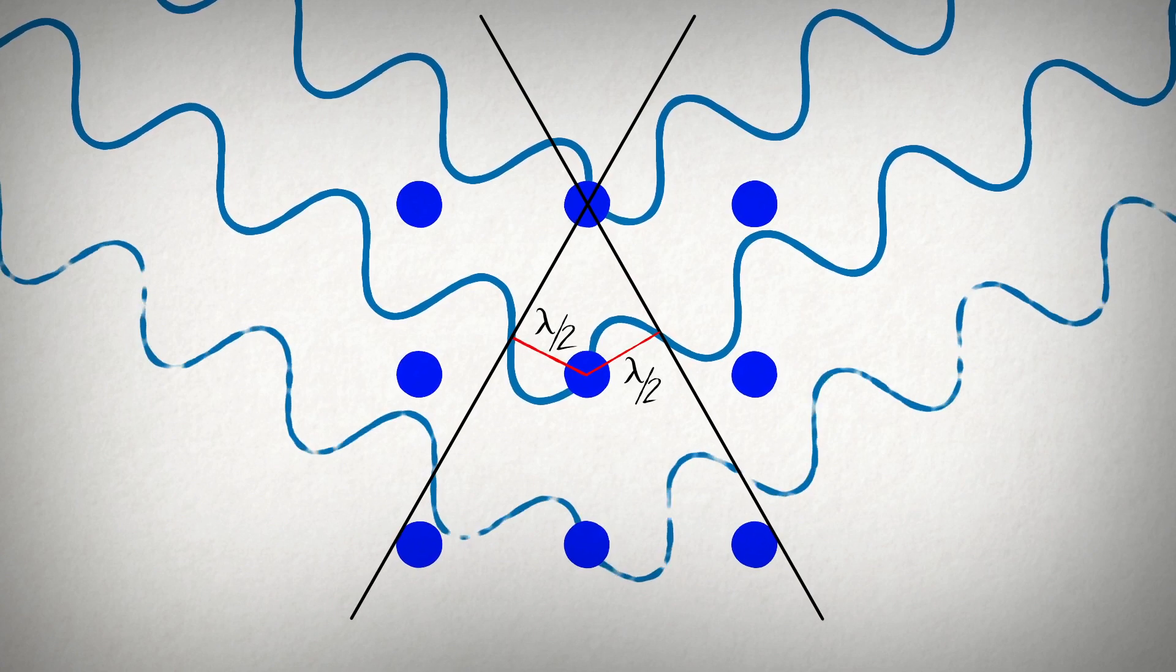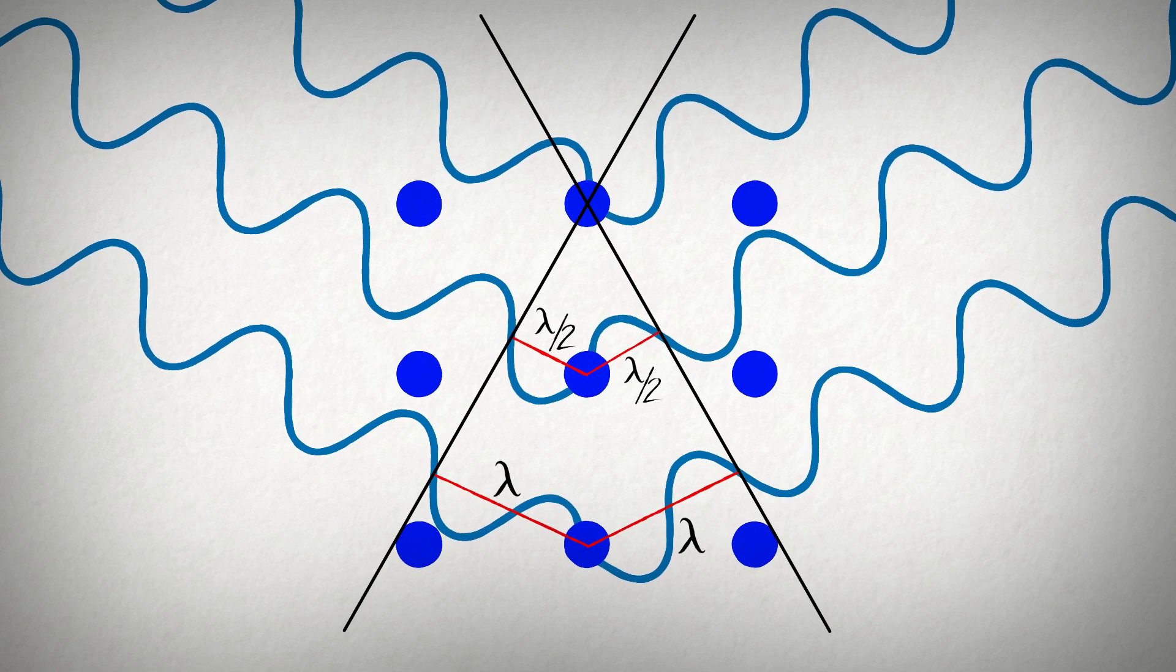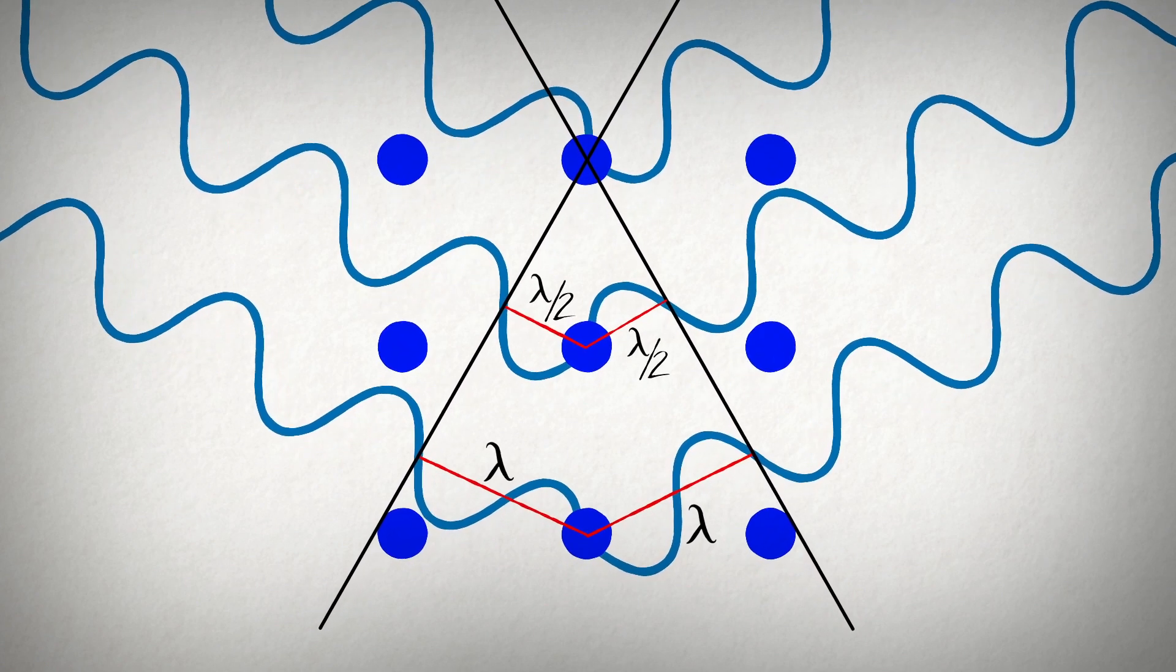In the case of the next x-ray, one wavelength is traveled on both the incident and the scattered sides, resulting in two wavelengths. This reinforcement occurs throughout the crystal.